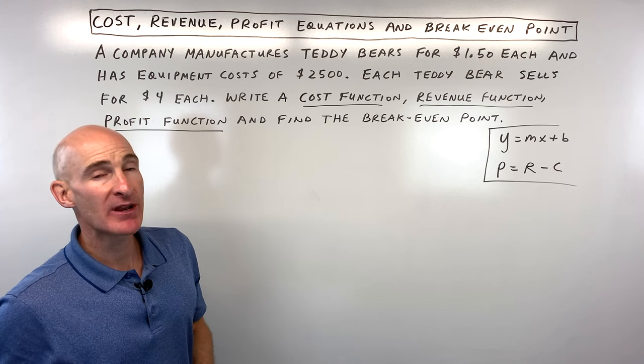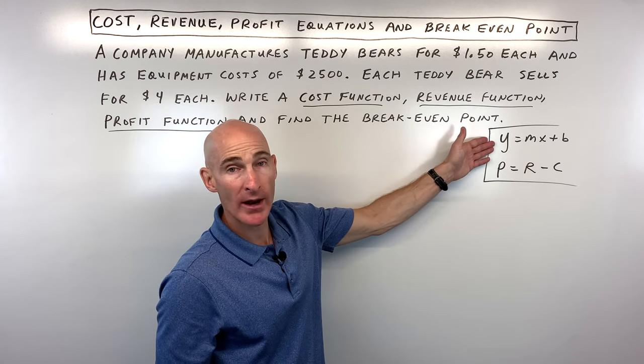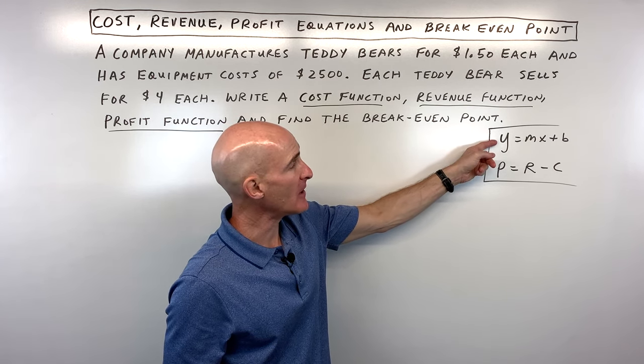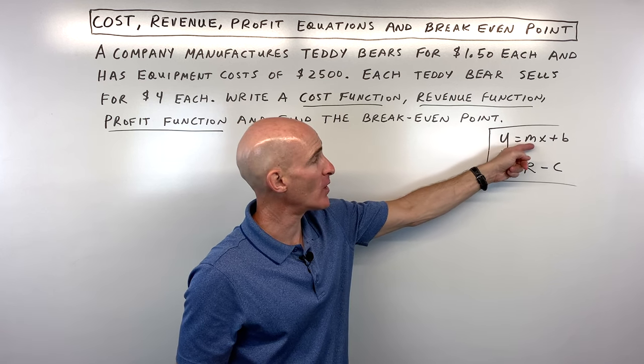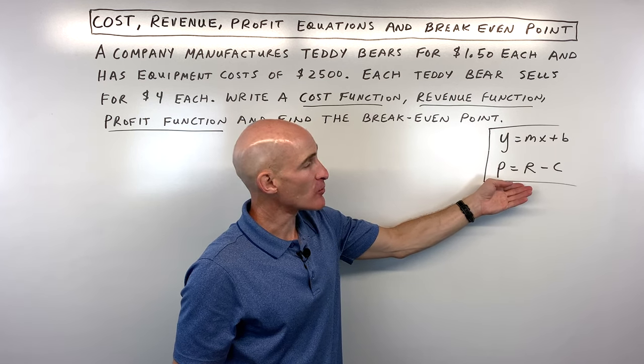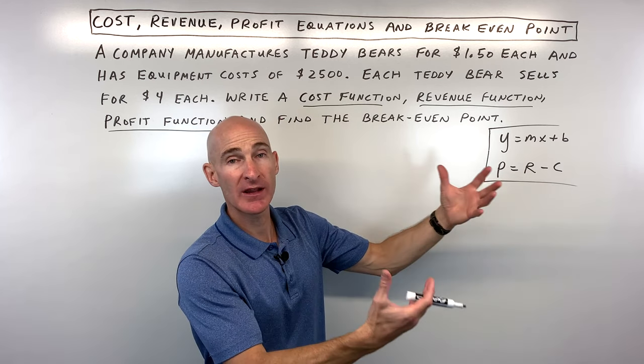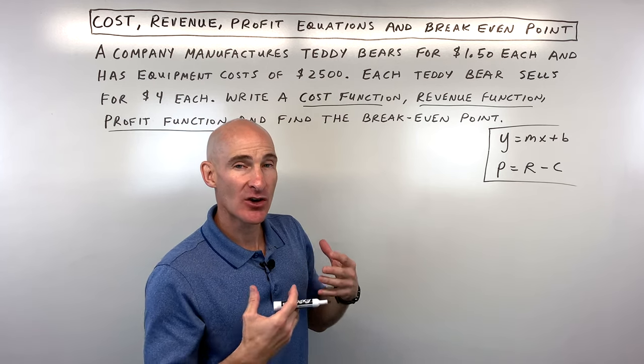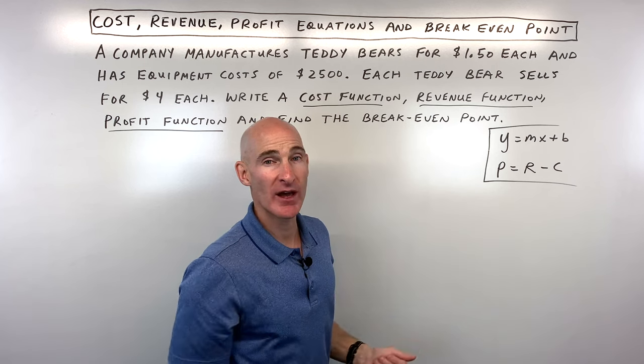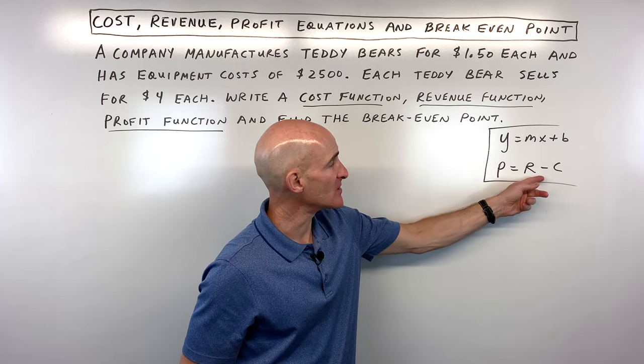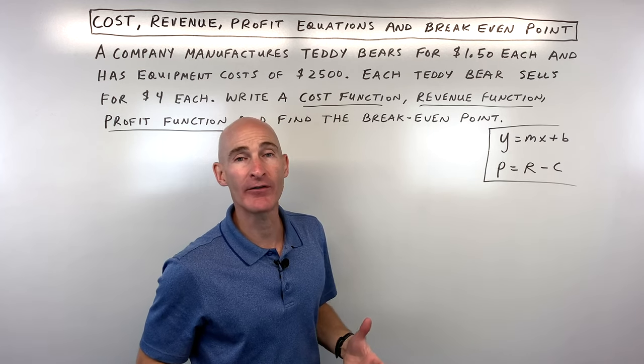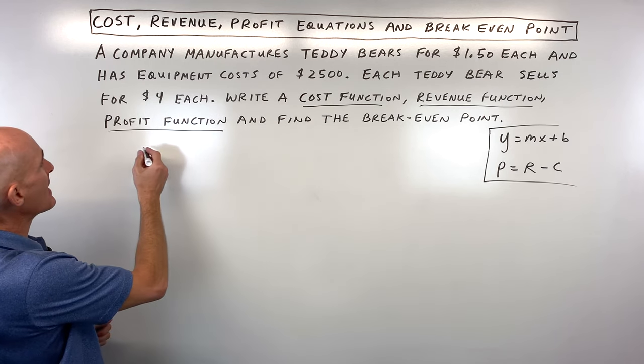Let's take this one step at a time. Some equations that you might want to write down or memorize are the basic slope-intercept form of the equation of a line, as well as your profit equation. Profit is equal to the revenue, the money that you take in, minus the cost, the expenses, or what you spend going out. So that difference is your leftover, which is your profit.